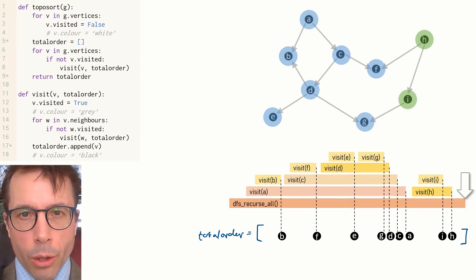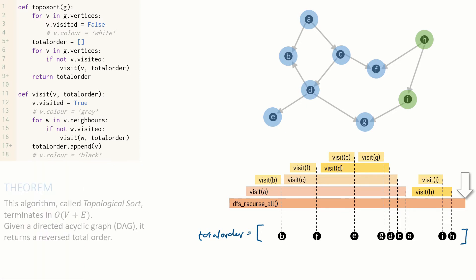So this is the algorithm for finding a total order, and it's called topological sort. It actually returns a reversed total order, but if you wanted the vertices the other way around, you just replace the append on line 17 with a prepend. This algorithm is basically just depth-first search, so its running time is exactly the same: big O of V plus E. And here's the statement of correctness.